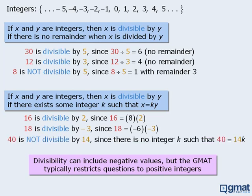One last example: 40 is not divisible by 14 since there exists no integer k such that 40 equals 14 times k.